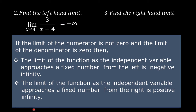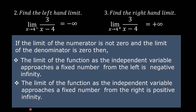Third step: find the right-hand limit. The limit of 3 over (x minus 4) as x approaches 4 from the right. The limit of the numerator 3 is 3, which is not 0, and the limit of the denominator is 0. Therefore, the limit of 3 over (x minus 4) as x approaches 4 from the right is positive infinity.